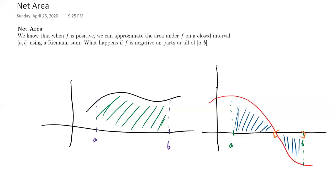What is net area? In all the previous examples in section 5.1, when we were approximating area using rectangles, our function was always positive. We always had a positive function, so when it came to approximating the area it was very clear what we were approximating — the area bounded above by f and below by the x-axis, that region in green.